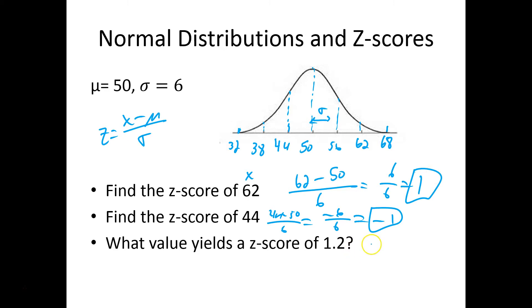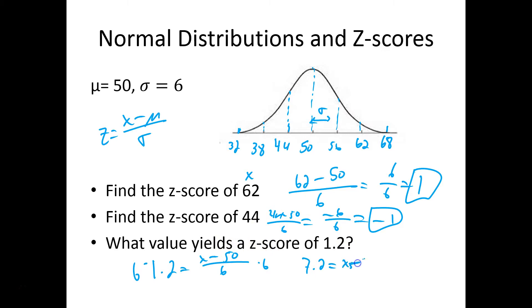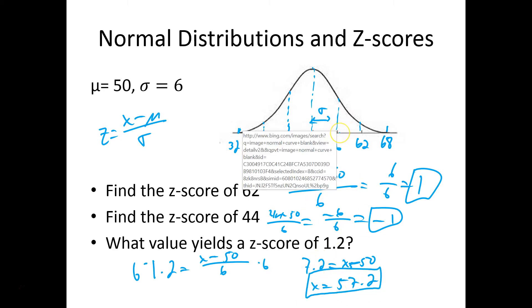Let's say what value yields a z-score of 1.2. Our value should be somewhere between 56 and 62 — maybe 57 or 58. So we have 1.2 equals x minus 50 divided by 6. Multiply both sides by 6 to get 7.2 equals x minus 50. Add 50 to both sides: x is 57.2. Just beyond 56 — our prediction was right.